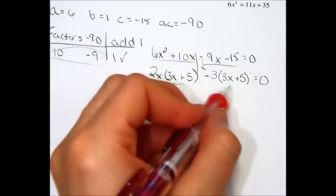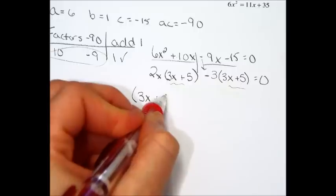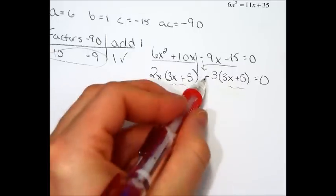Look at your two parentheses. They are now the same. Bring the 3x plus 5 out front. You are left with a 2x and a minus 3.